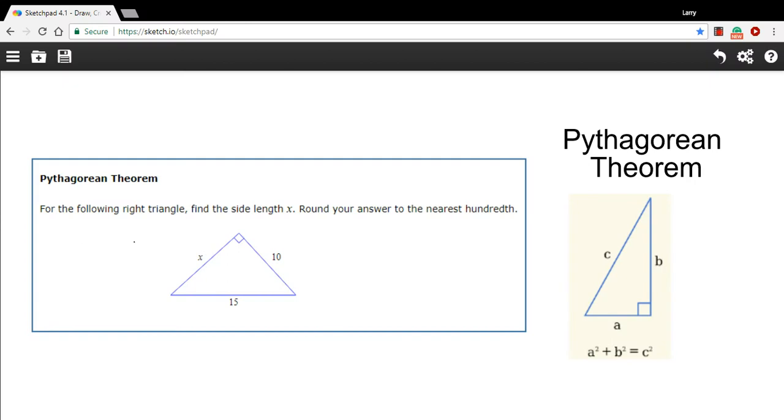In this problem, we're using the Pythagorean theorem to solve for a side in a right triangle. The Pythagorean theorem says that if we have two sides, we can always get the third one. We just need to know which side is the hypotenuse, the C side in this formula of A squared plus B squared equals C squared.